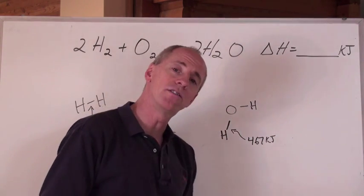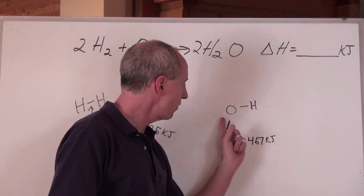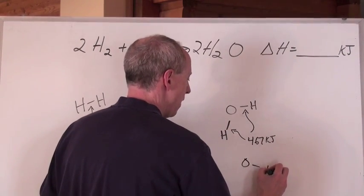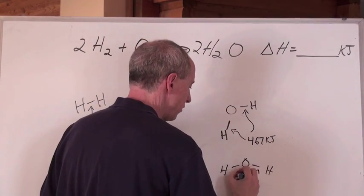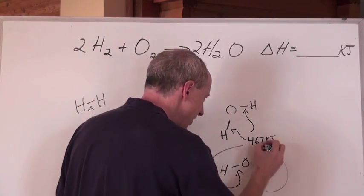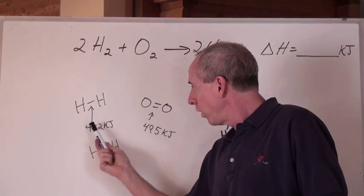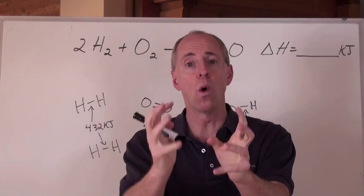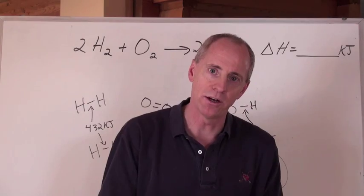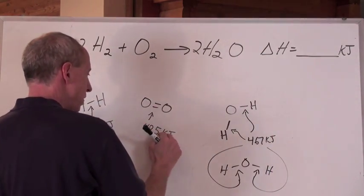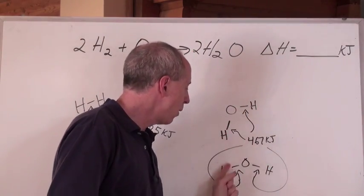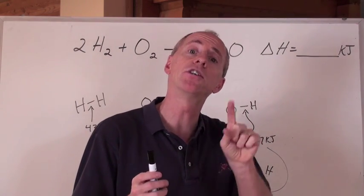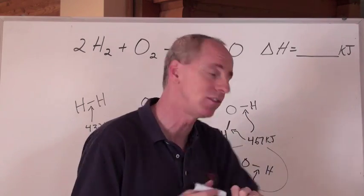That O–H bond is given an energy of 467 kilojoules, experimentally determined. There are two of those bonds in one water molecule, so it's 467 times 2 — but since there are two water molecules in the equation, that becomes times 4 total. The technique here uses common sense: energy required to break bonds is positive. On the product side, all these bonds are forming, so energy is released. Bond energy tables always list the energy required to break a bond, but when a bond forms, energy is released, so you make that value negative.